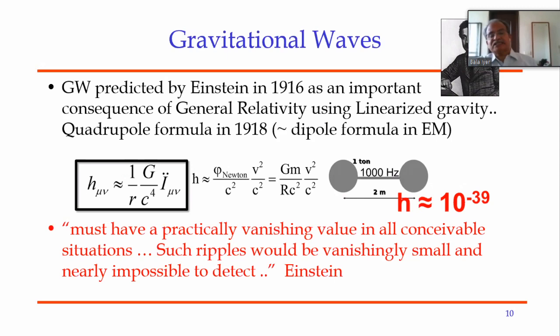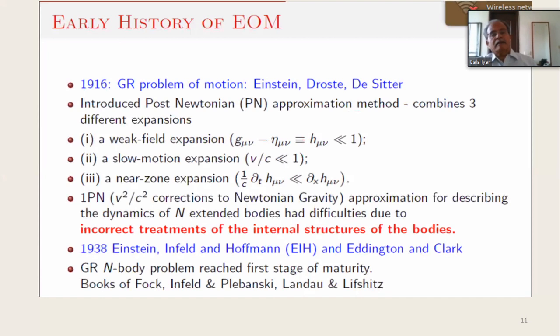Of course he was right, because the detection of gravitational waves took almost a hundred years. Looking at all these predictions Einstein was trying to make, one realizes that one is trying to solve the problem of motion not in Newtonian gravity but in the general theory of relativity — implicitly using what we call today as the post-Newtonian approximation methods.